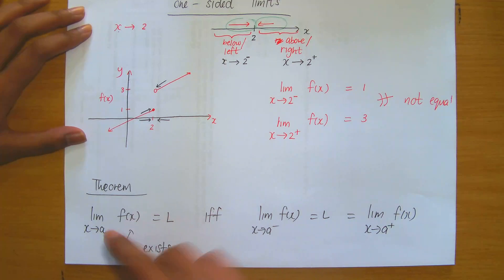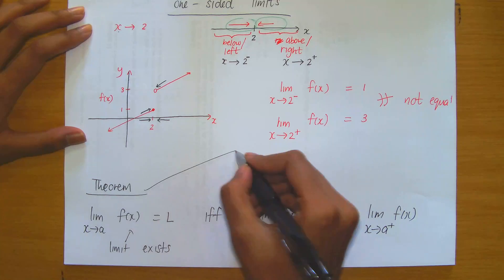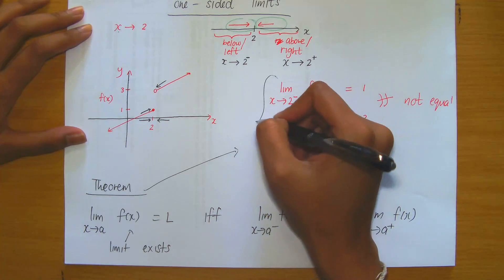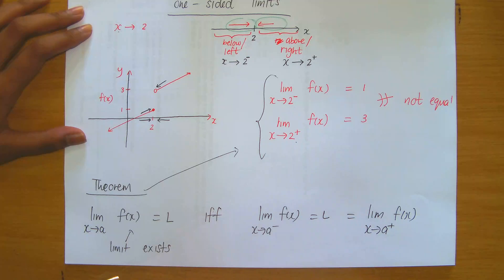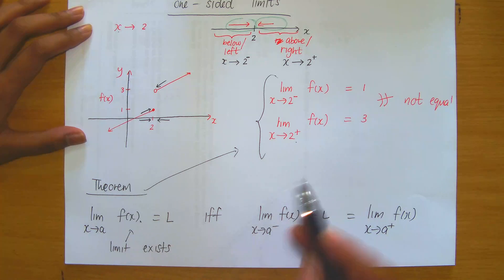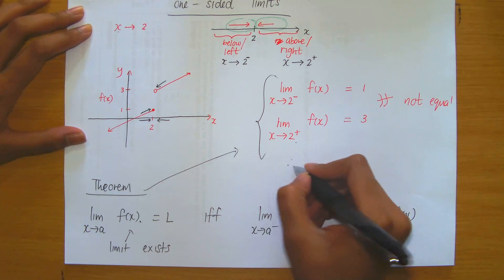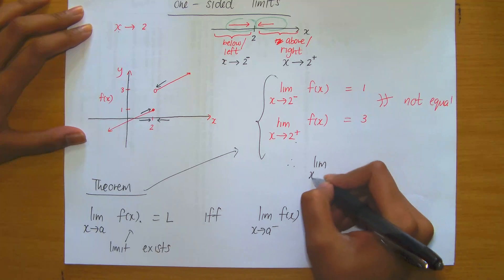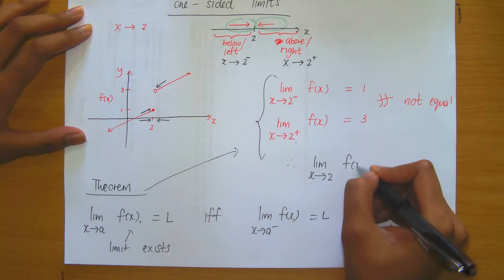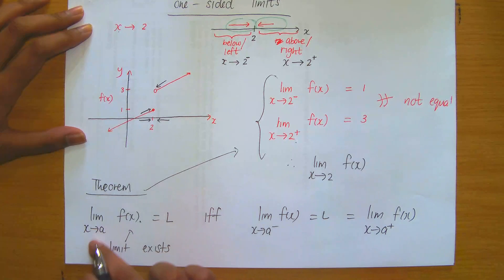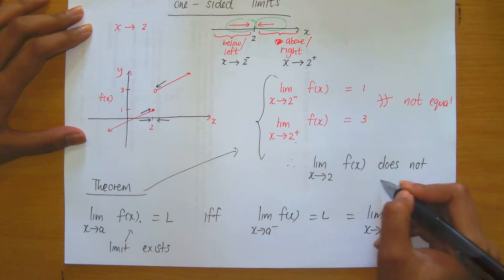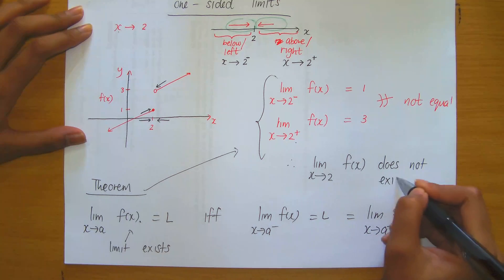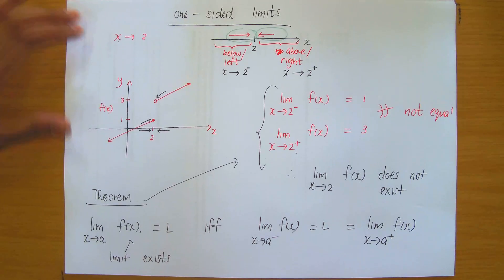Applying this theorem to our example: the left-hand limit does not equal the right-hand limit, so therefore the general limit as x approaches 2 of f(x) does not exist. Keep this type of application in mind.